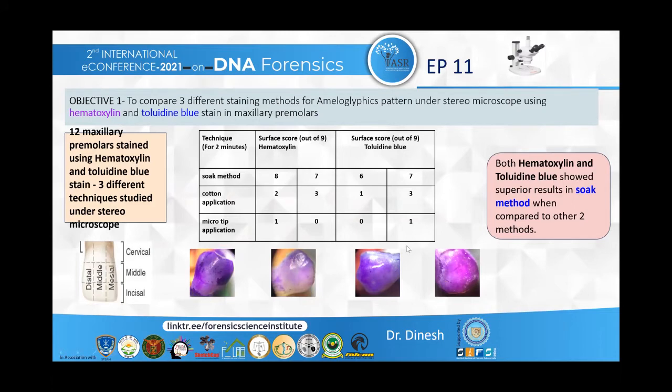In the first phase, the objective was to compare three different staining methods for ameloglyphic patterns under stereomicroscopy using hematoxylin and toluidine blue stain in maxillary premolars. For this, 12 maxillary premolars were stained using hematoxylin and toluidine blue stains, and three different techniques were studied under stereomicroscope. The labial surface of the premolar was separated into nine sections based on distal, middle, and mesial thirds of the tooth.